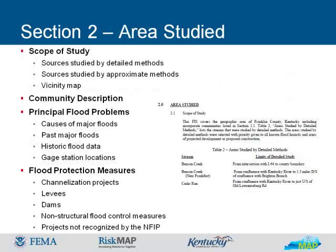The scope of study identifies which flooding sources were studied by detailed methods of analysis and the geographical limits of the study, as well as upstream and downstream limits. Names of streams studied by approximate methods of analysis are also included. A location of the community in reference to the county and/or state is included via the vicinity map. The location, climate, and many of the physical characteristics are included in the community description, including the size and population of the community, average rainfall and temperature, soil types, and names of adjacent communities.